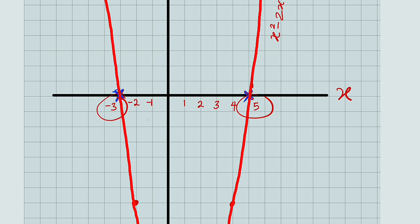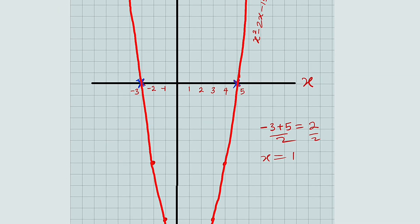So if you add negative 3 and 5 together, you're going to get positive 2. If you divide them by 2, you're going to get 1. So at x equal to 1, you are halfway in between the two roots. So let me draw a line in between them at x equal to 1. Look at it here.